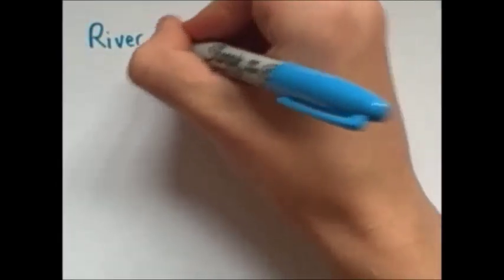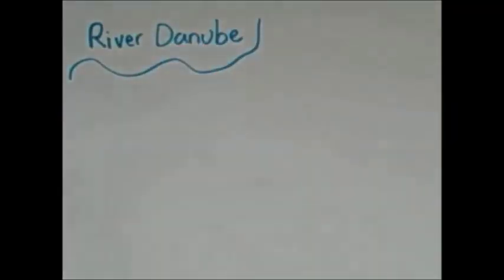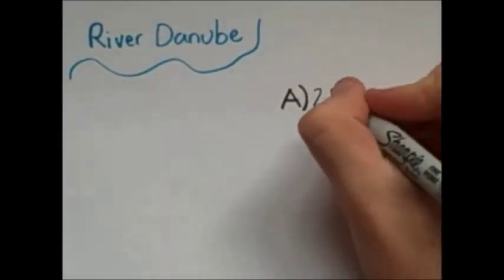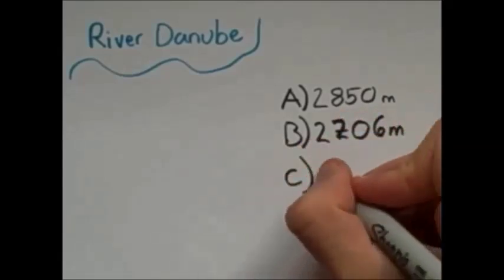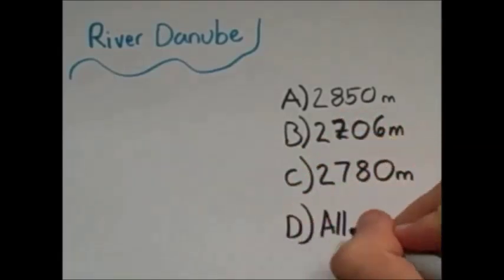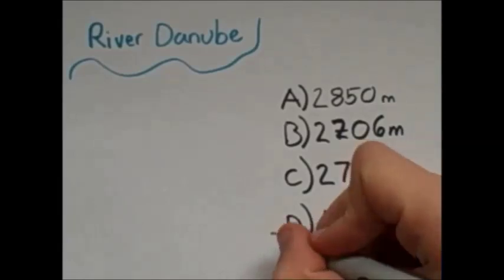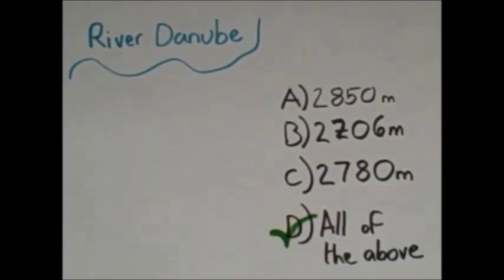Well let's look at another example, rivers. The river Danube is how long? 2,850 meters? 2,706 meters? 2,780 meters? The answer? All of the above. But how can this be?